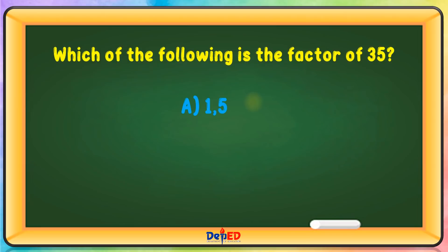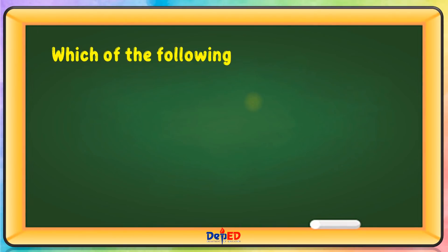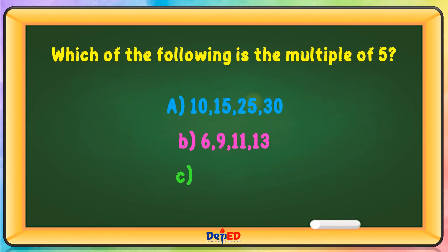Which of the following is the factor of 35? A. 1, 5, 7, 35. B. 1, 2, 5, 7. C. 1, 3, 5, 12. D. 1, 5, 9, 12. The correct answer is A. Which of the following is the multiple of 5? A. 10, 15, 25, 30. B. 6, 9, 11, 13. C. 5, 9, 14, 19. D. 5, 12, 24, 35. The answer is A.